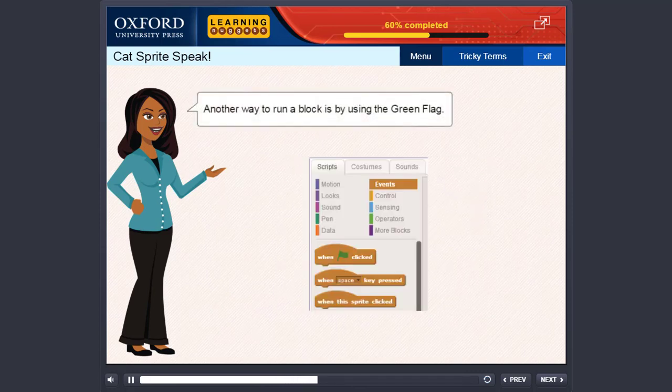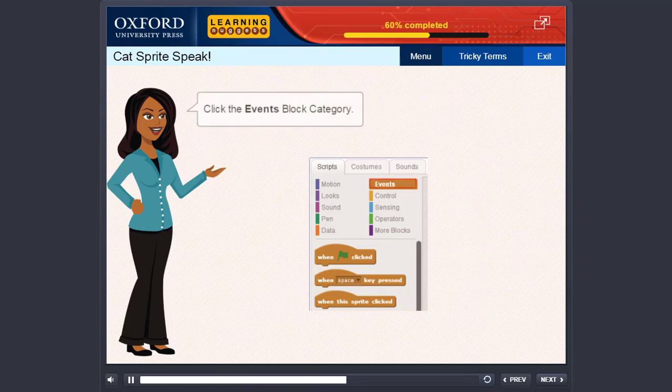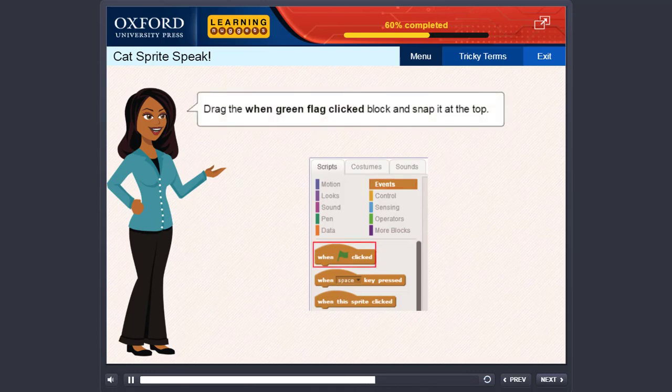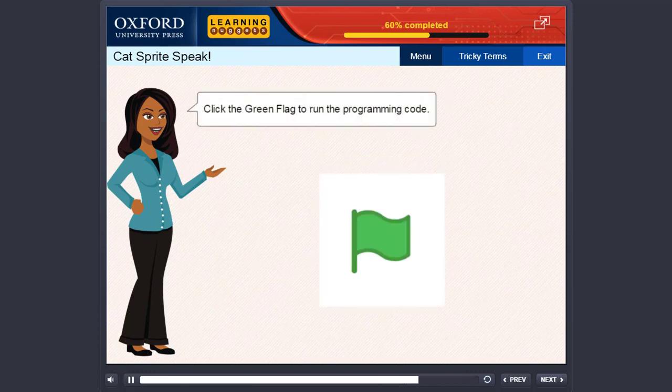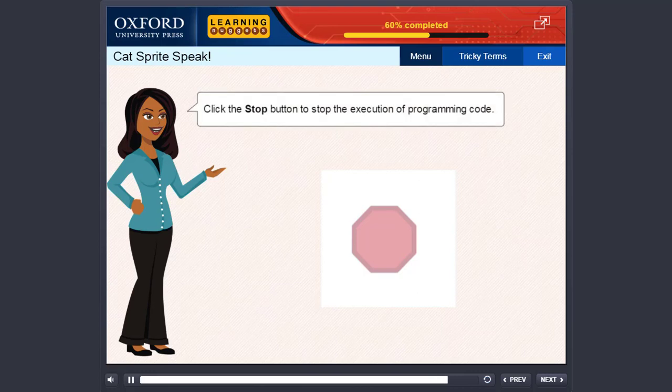Another way to run a block is by using the green flag. Click the Events block category. Drag the When green flag clicked block and snap it at the top. Click the green flag to run the programming code. Click the Stop button to stop the execution of programming code.